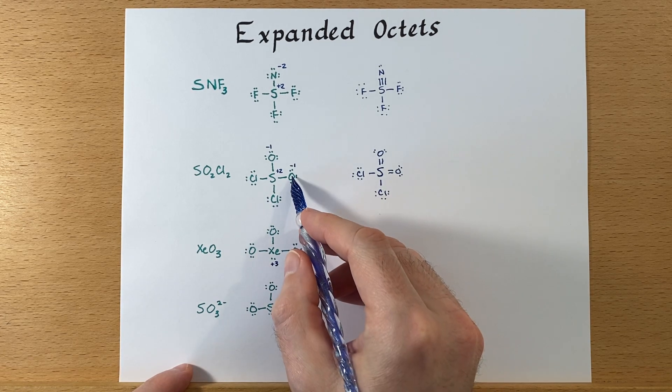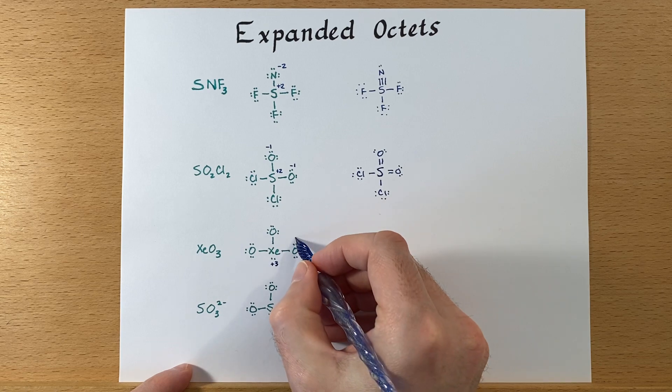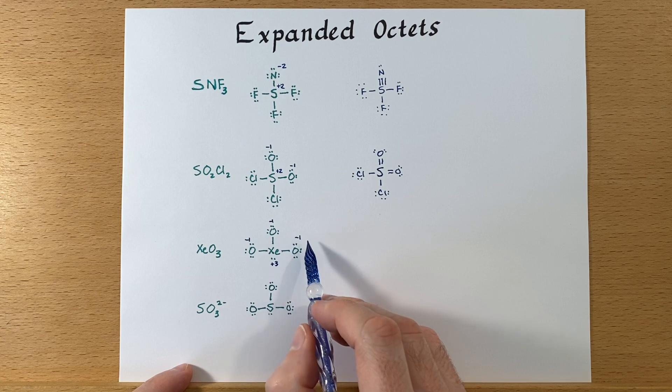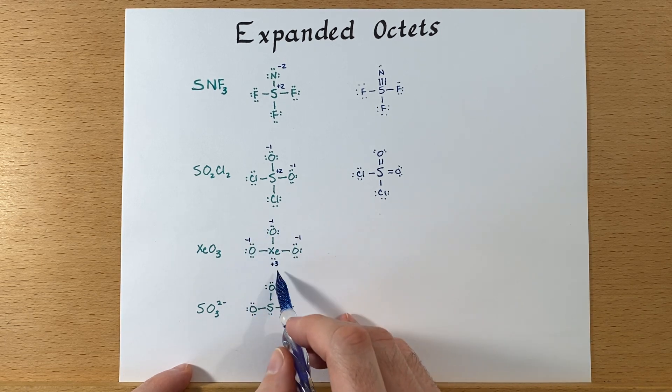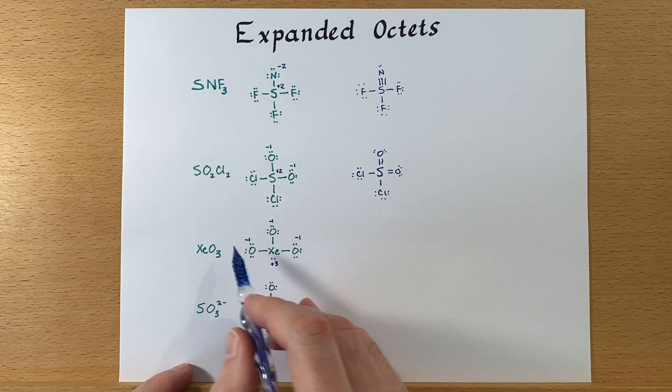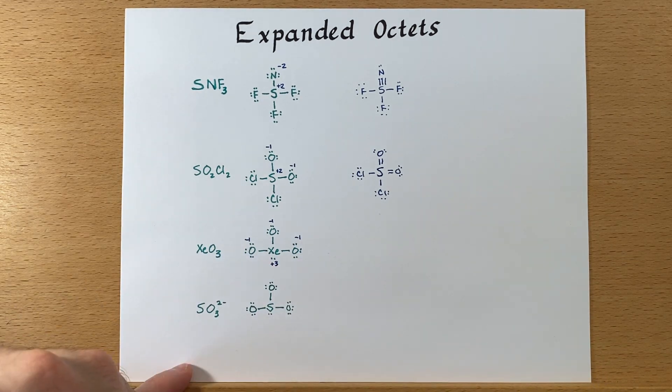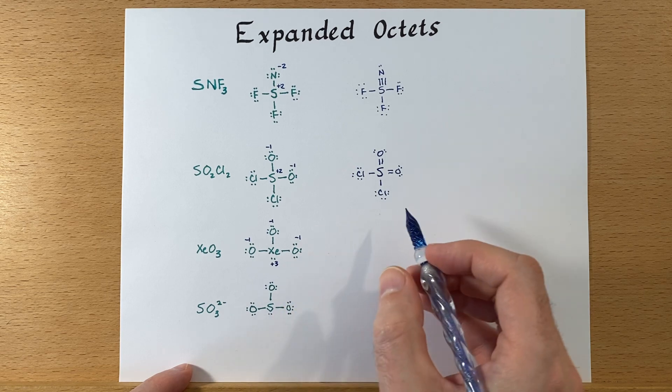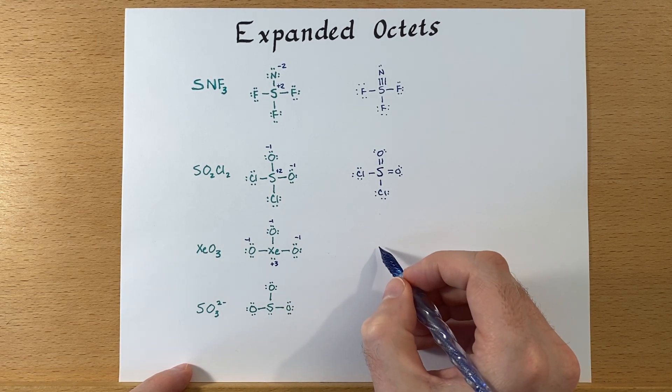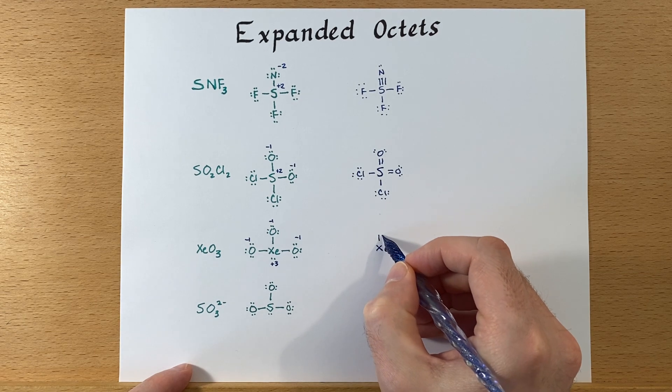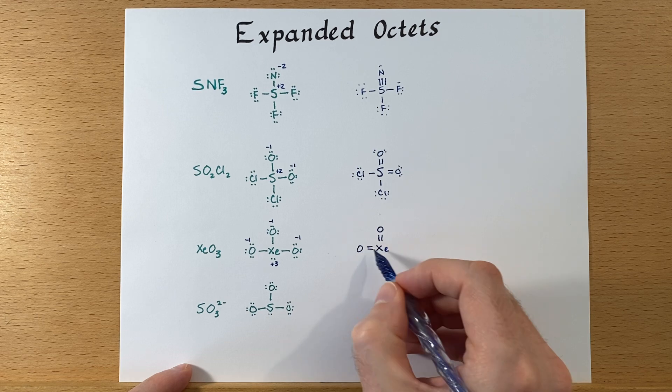And the oxygens, like we have up here, are also minus one. Now that's good that this is minus ones and that's plus three because this is a neutral species, so those formal charges should add up. It's not ideal though that xenon has a plus three. So again, if we put double bonds to the oxygens, we may be able to make a better structure.